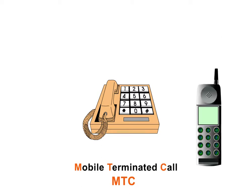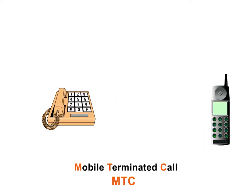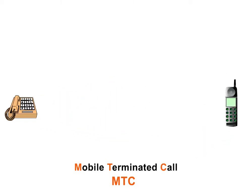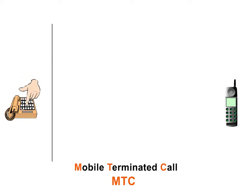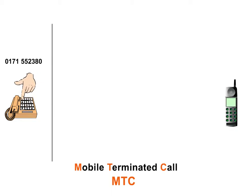Let's look at the MTC using a call from a PSTN as an example. First, a PSTN customer dials the number of a mobile phone. The number dialed is the MSISDN.